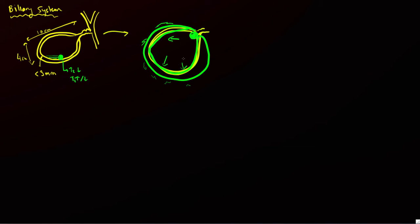A complication of acute cholecystitis is gangrenous cholecystitis, where the gallbladder becomes ischemic. The mucosa becomes ischemic and starts to disappear, often at the fundus, producing floating membranes of mucosa inside the gallbladder. Floating membranes are the hallmark of gangrenous cholecystitis.